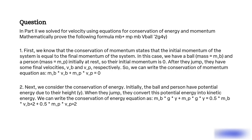Step 2. Next, we consider conservation of energy. Initially, the ball and person have potential energy due to their height y. When they jump, they convert this potential energy into kinetic energy. We write the conservation of energy equation as: mb * g * y + mp * g * y = 0.5 * mb * vb² + 0.5 * mp * vp².